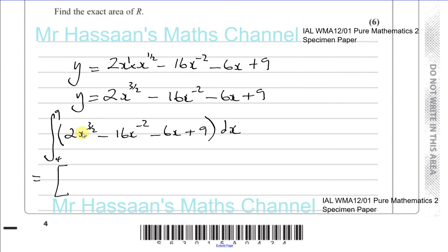Now I need to add 1 to the power and divide by the new power. So I've got 2x. Now if I add 1 to the power I'm going to get 3 over 2 plus 1 which is 3 over 2 plus 2 over 2 which is 5 over 2. So I have to divide this term by 5 over 2.